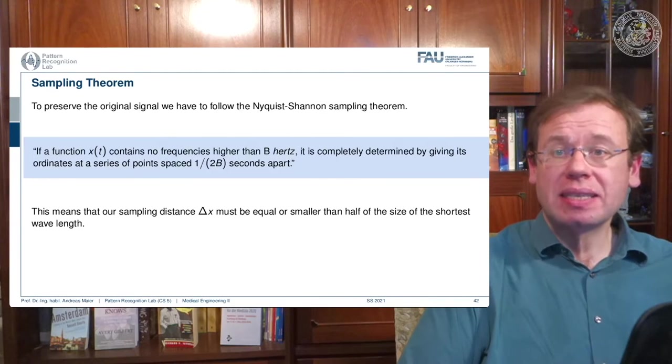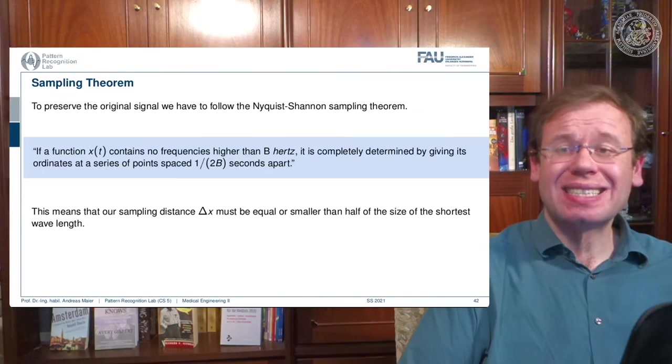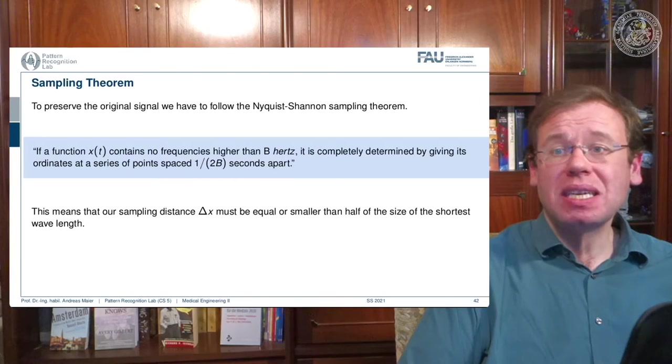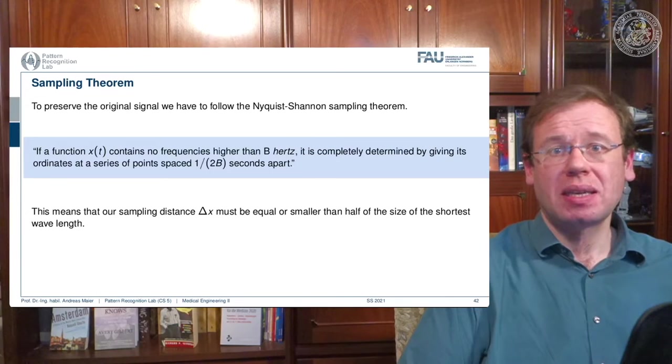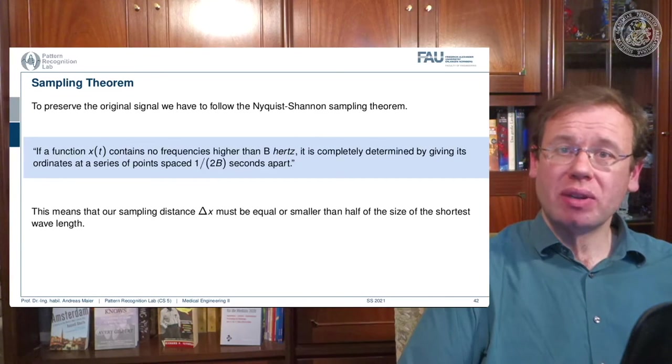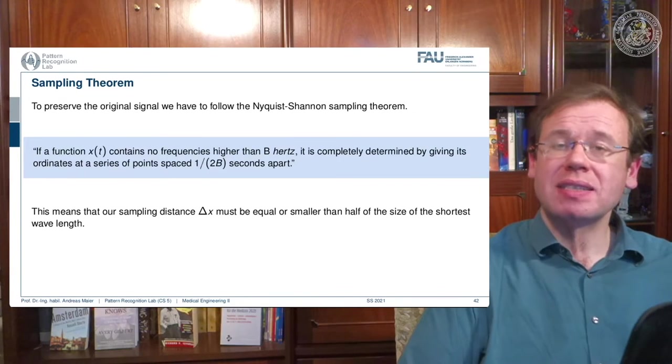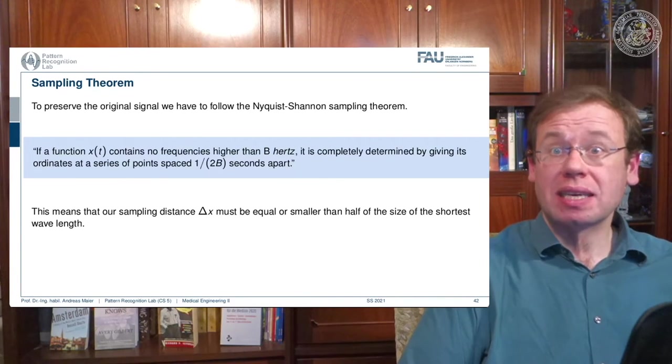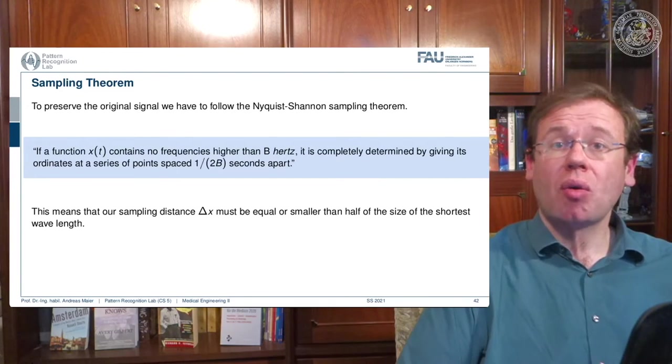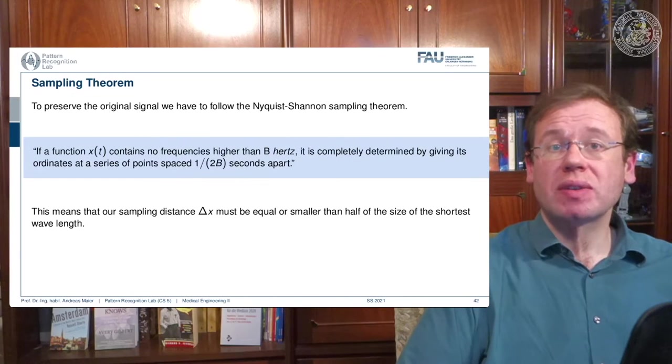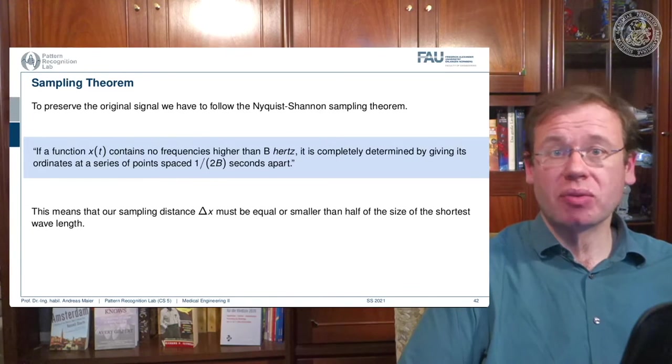So this means that our sampling distance delta x must be equal or smaller than half of the size of the shortest wavelength. So the shortest wavelength divided by 2 gives you the step size on your x-axis. So this is the sampling step size delta t. Or if you convert it to frequency domain, it would be the sampling frequency.